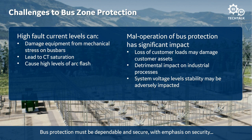Conversely, mal-operation of the bus protection system has significant impact, including customer outages, process downtime leading to financial impact, and voltage stability issues that can adversely affect other equipment. A more serious case is widespread system collapse, such as the 2003 Northeast Blackout — I was living in New York City at the time; it was not pleasant in the middle of August. Therefore, we must design a dependable and secure bus protection scheme. Increasing dependability may sacrifice security, and for the most part we emphasize security to keep customers online.